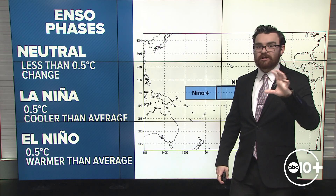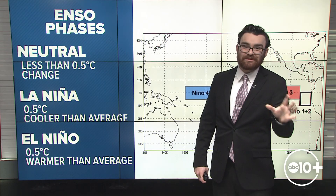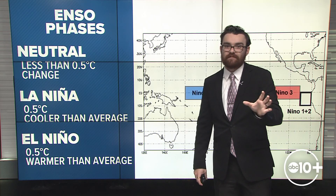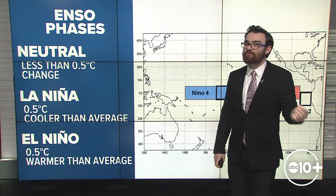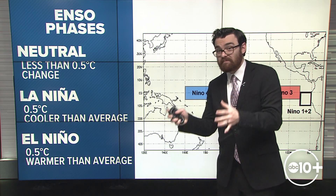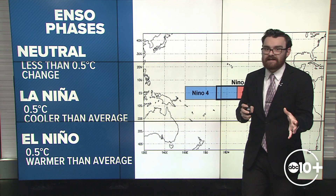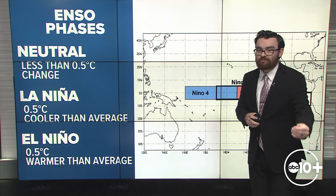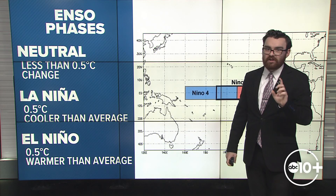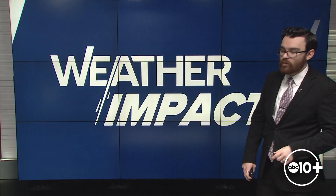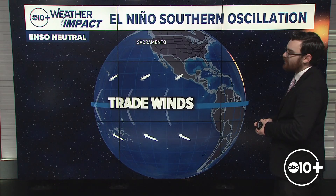Each of these controls how the weather is across much of North America and South America. But it's not a direct connection — it definitely sets up patterns, but it doesn't directly affect whether it's going to rain or snow. There are some other things at play, and we'll talk about that in just a minute.